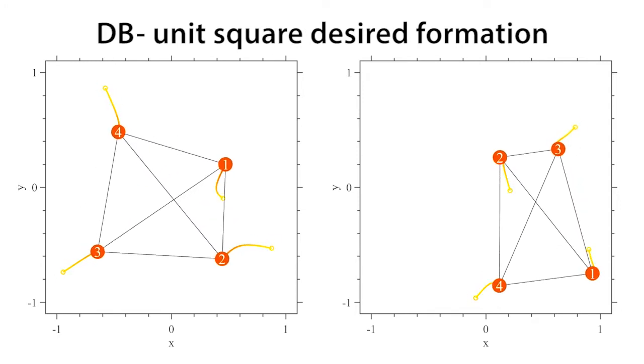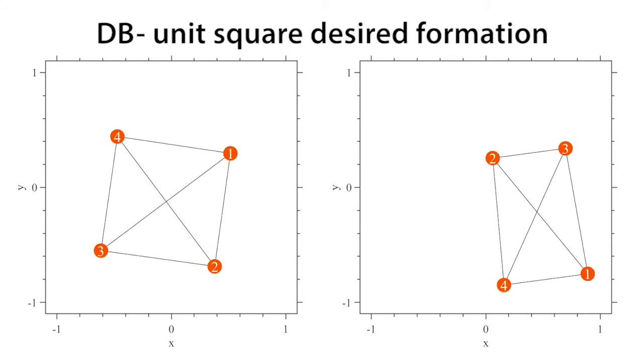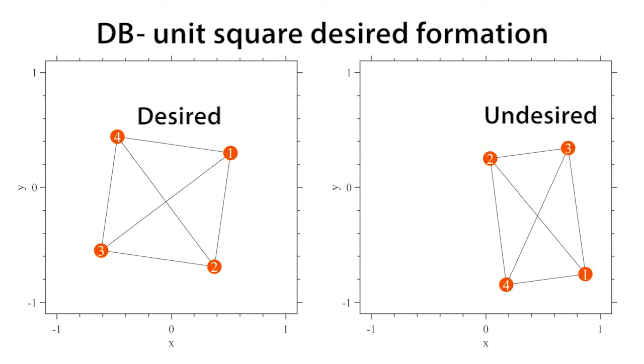In the DB method, the scale of the achieved formation is controlled. However, the convergence is local and in general stable undesired equilibria exist.